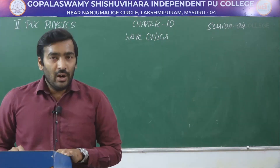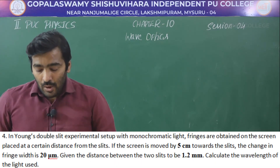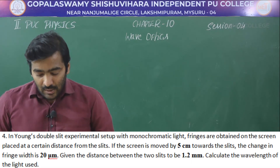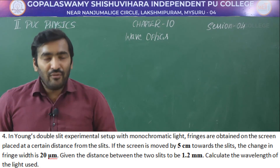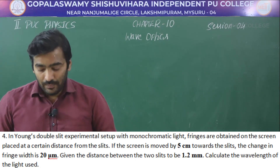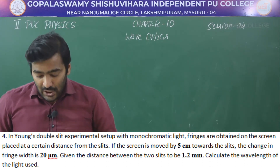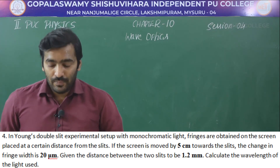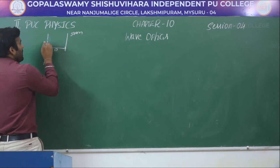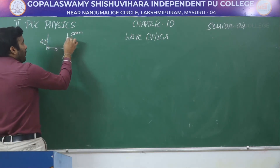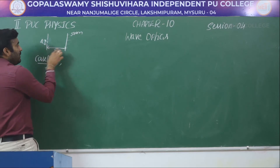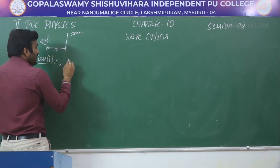Next problem: In a Young's double slit experimental setup with monochromatic light, fringes are obtained on a screen placed at a certain distance from the slits. If the screen is moved 5 centimeter towards the slits, the change in fringe width is 20 micrometer. The distance between the two slits is 1.2 millimeter. Calculate the wavelength of light used. In Case 1, the distance from slits to screen is D, and the slit separation d = 1.2 millimeter.